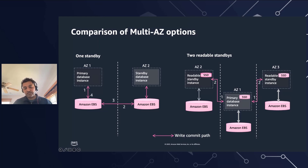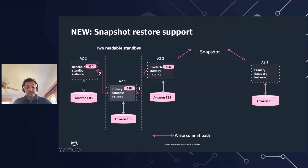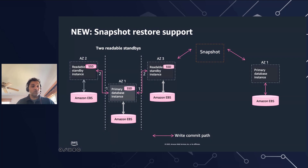So what's changed? Assume in your production you're running a one-standby instance and you want to switch to two readable standby. The new inbound replication makes this easy — you can create a replica cluster from your one-standby instance, replicate data inbound from one standby to two readable standby, and once it's caught up, switch over. The second improvement is snapshot restore: if you're already running on two readable standby and want to restore for dev or QA work where you don't need two readable standby, you can take a snapshot and restore it to a single instance or Multi-AZ with one standby.